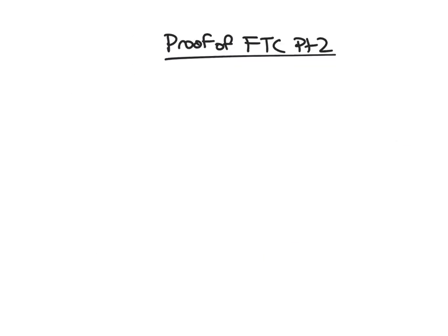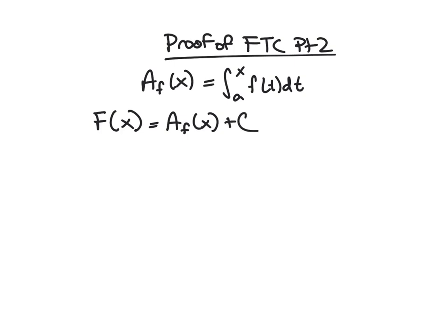Now let's prove the Fundamental Theorem part two. Recall from part one that the area function is defined to be the integral from a to x of f(t) dt. In part two, we said big F was any antiderivative of little f. The area function is at least one of these antiderivatives, and all other antiderivatives just differ by a constant. So F(x) = A_F(x) + C, since A_F' = f.